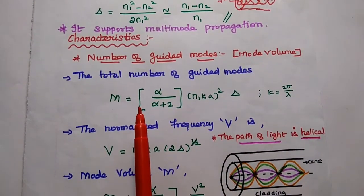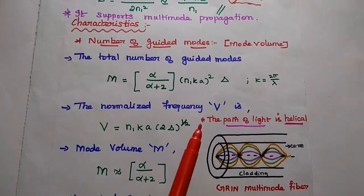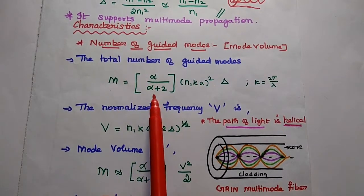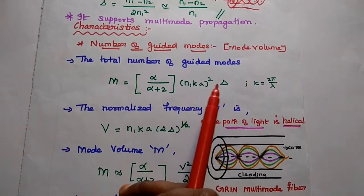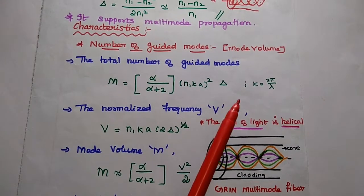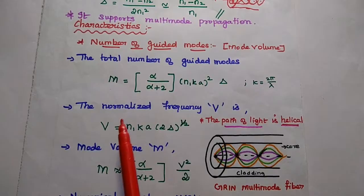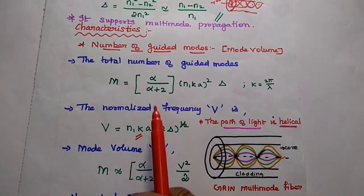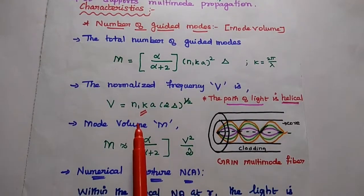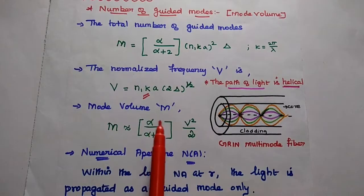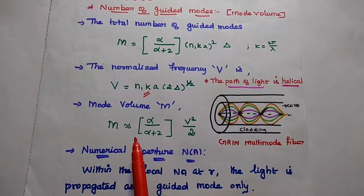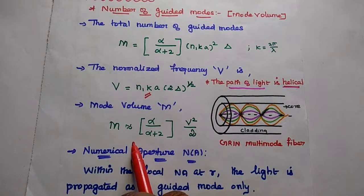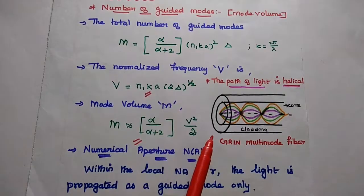Since the graded index fiber supports multi-mode propagation, the first characteristic parameter is the total number of guided modes M, given as M = (alpha / (alpha + 2)) · (N1·K·A)^2 · delta, where K·A equals 2·pi / lambda. Defining the normalized frequency V as N1·K·A·(2·delta)^(1/2), the total number of guided modes, also called the mode volume, can be written as M ≈ (alpha / (alpha + 2)) · (V² / 2).